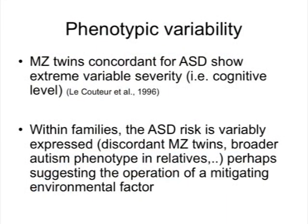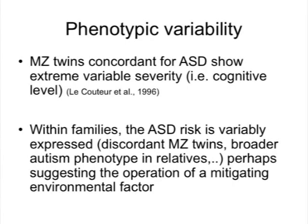There is another argument sometimes put forward, which is to say there is a lot of variability in the phenotype. If one looks at MZ twin pairs which are concordant — so both twins in the same pair each have autism — you can still have a huge variability in phenotype between these two subjects. For instance, in the UK twin study, you could have pairs of MZ twins concordant for autism where one has high IQ and the other is very severely retarded, with up to an 80-point difference in IQ within the same pair. This shows that part of the phenotype is not under tight genetic control, and perhaps environmental factors explain part of the variance.